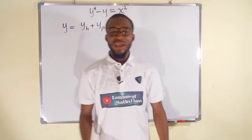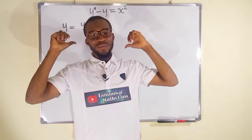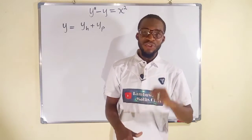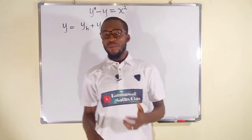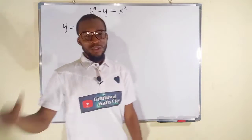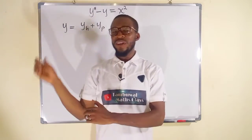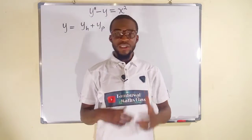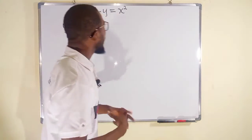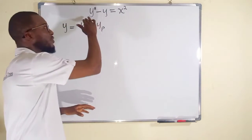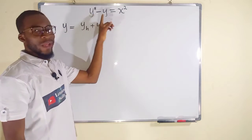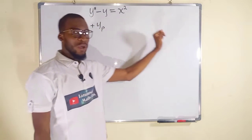Hello, good morning viewers. Here is our first problem on second order linear non-homogeneous differential equations. Remember, we have to start from the simple one to the complex one. In our previous lesson, we have seen the introduction to the topic. So in this tutorial, we want to find the general solution to this equation, which is y double prime minus y equal to x squared.